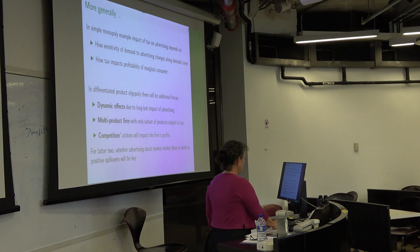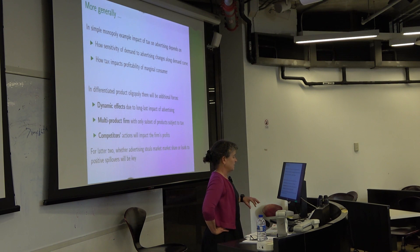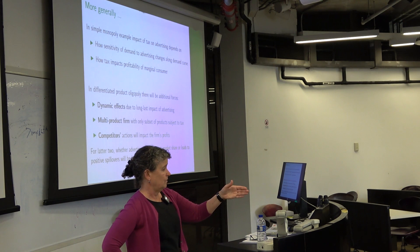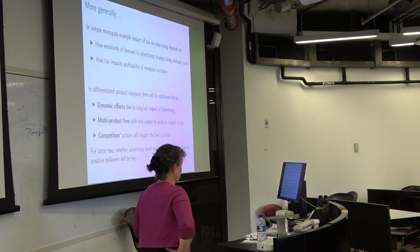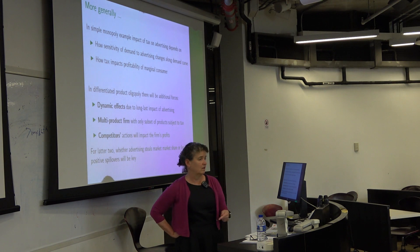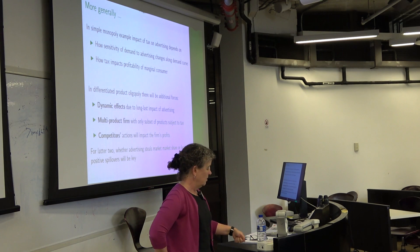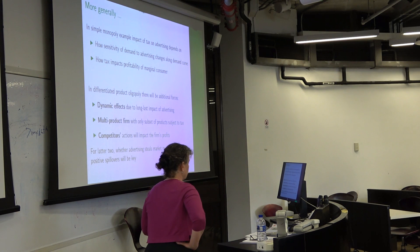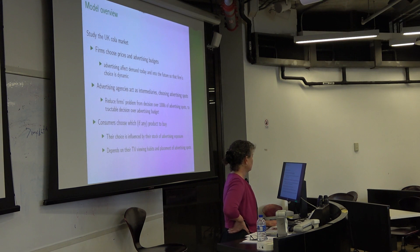For the multi-product and competitor effects, it's going to depend a lot on whether advertising is stealing market share versus expanding the market. We want to allow that advertising for Coke and Pepsi could either shift market share between them or move people in and out of the market altogether. It also depends on the extent to which advertising for one product spills over onto another — if I advertise Diet Coke, does that shift people from Diet Pepsi to Diet Coke, or does it bring people into the cola market entirely?